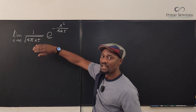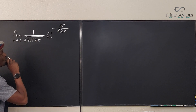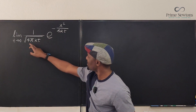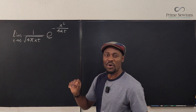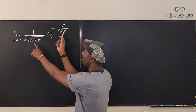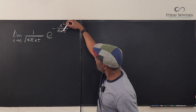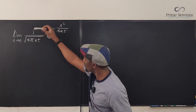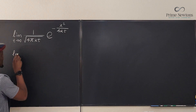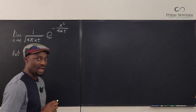The problem I'm having is that these two parts don't look the same — there's a 4πkt here and 4kt there. I want to substitute something that includes t and is common to both. There's no x in common, but there is t, k, and 4, and both are in the denominator. So I'll let u equal one over 4kt.